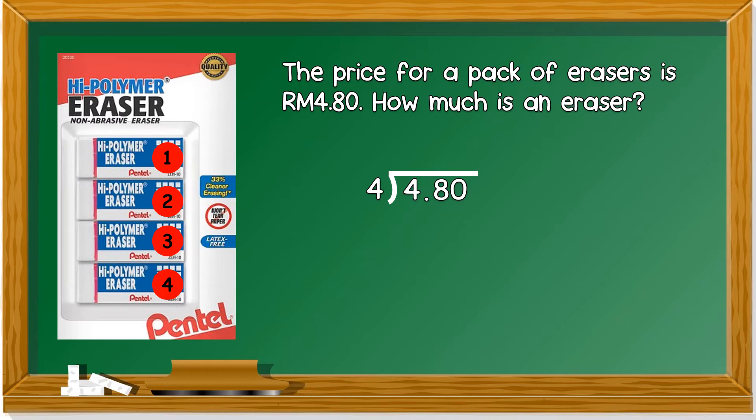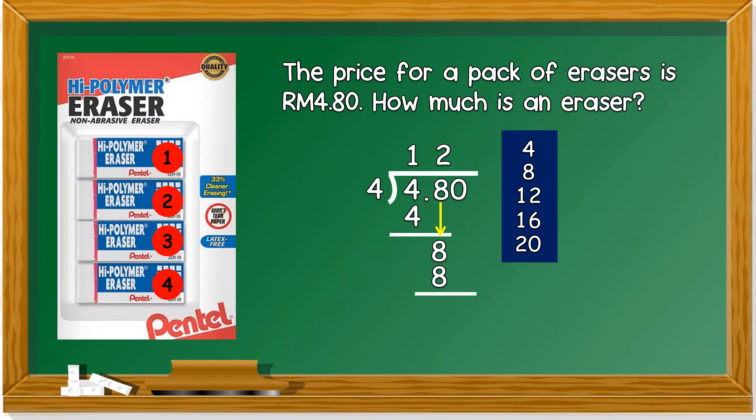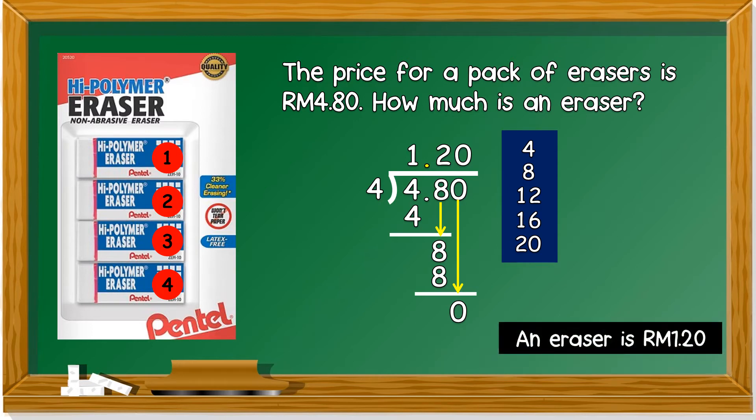We have to take a look at multiplication of 4. You can list it out first. Sing to the tune. 4, 8, 12, 16, 20. So 4 divided by 4 is 1. Next one, we bring down 8. 8 divided by 4 is 2. We bring down the 0. 0 divided by 4 is 0. Don't forget the decimal point. An eraser is RM1.20.